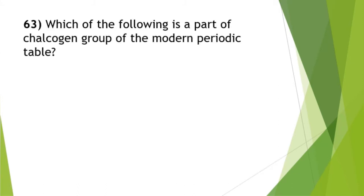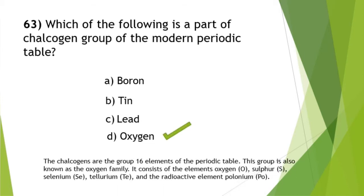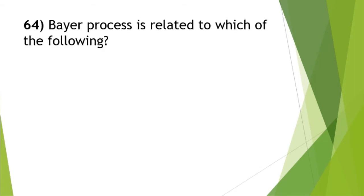Question 63: which of the following is part of the chalcogen group of the modern periodic table? The answer is option D — oxygen. The chalcogens are the group 16 elements of the periodic table, also known as the oxygen family. It consists of oxygen, sulfur, selenium, tellurium, and the radioactive element polonium.